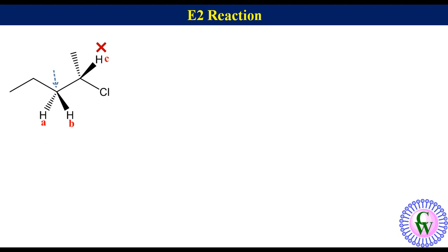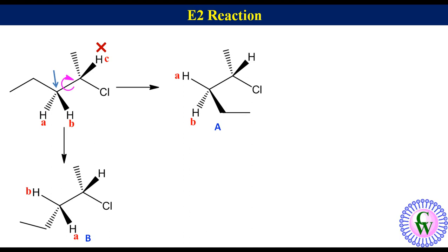If we rotate this center around the C-C bond clockwise through 120 degrees, it will give conformation A with HA anti to chloro. If we rotate the same center around the C-C bond anti-clockwise through 120 degrees, it will give conformation B.